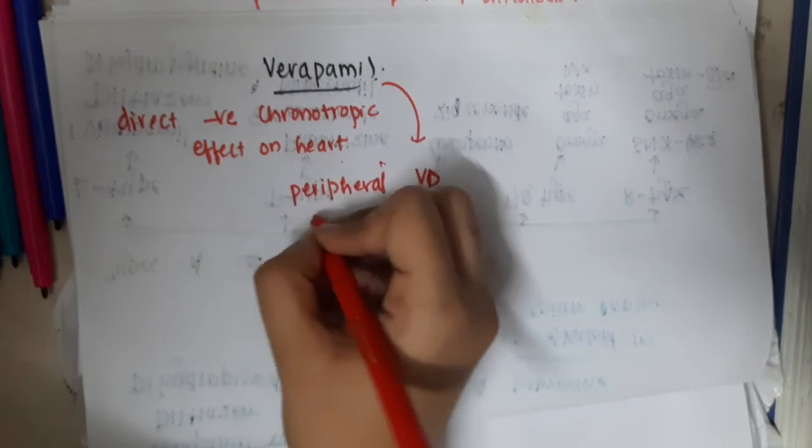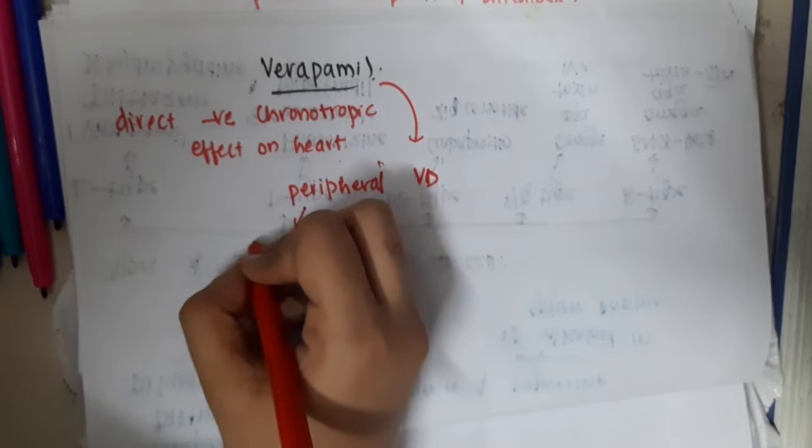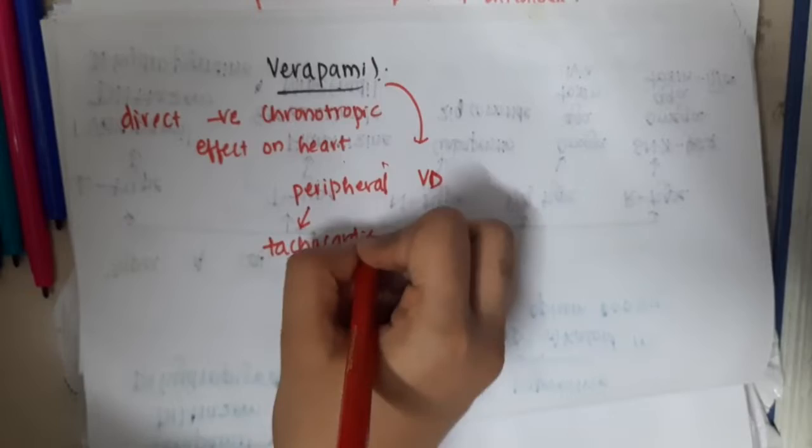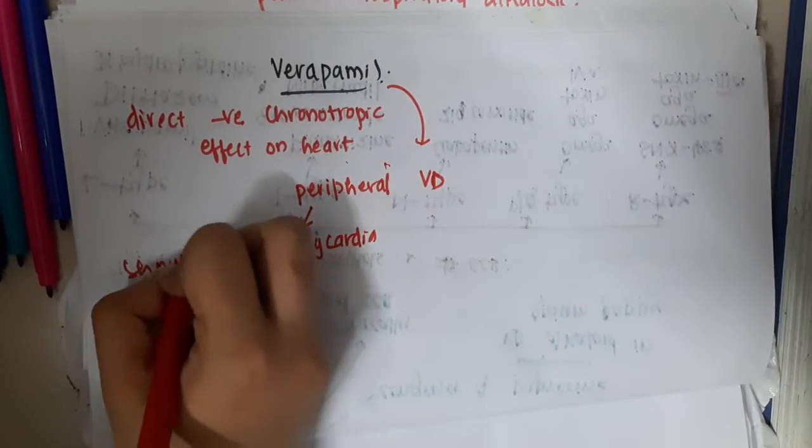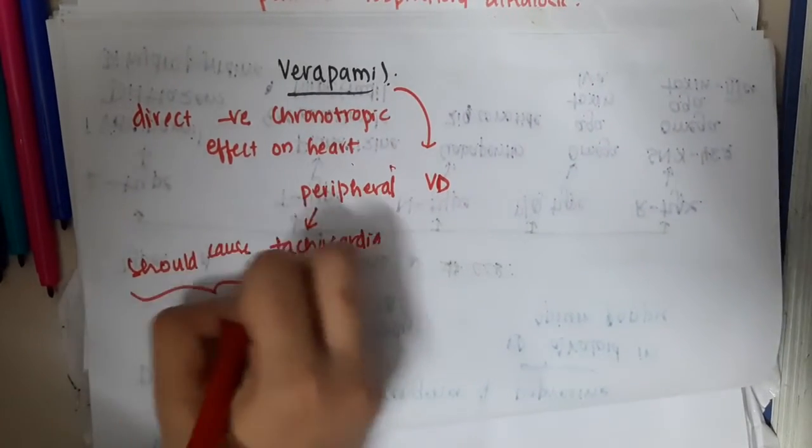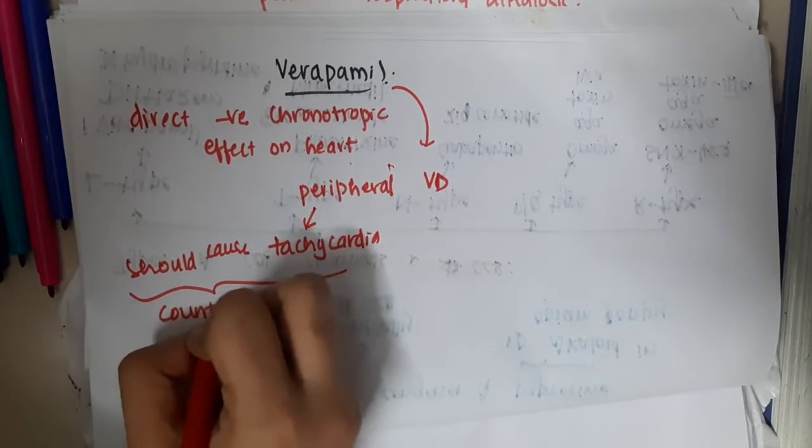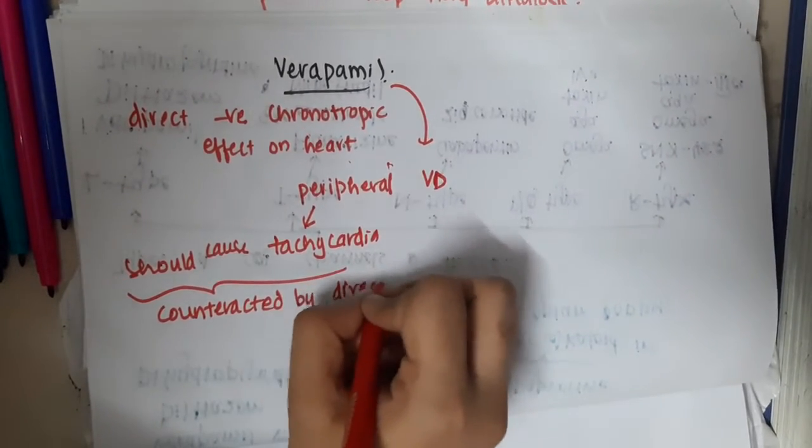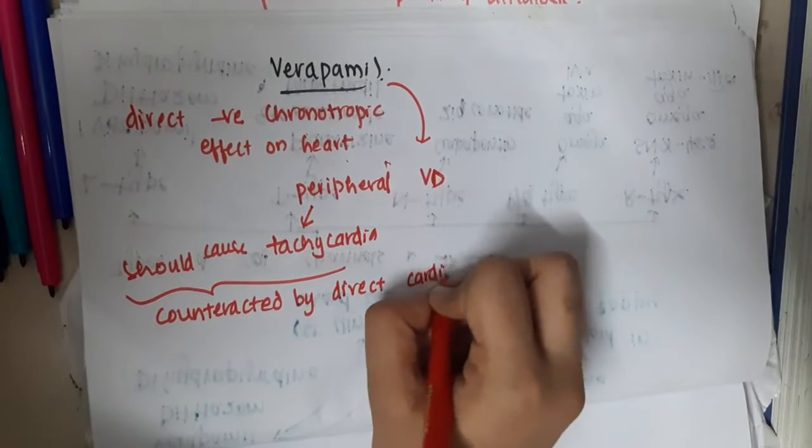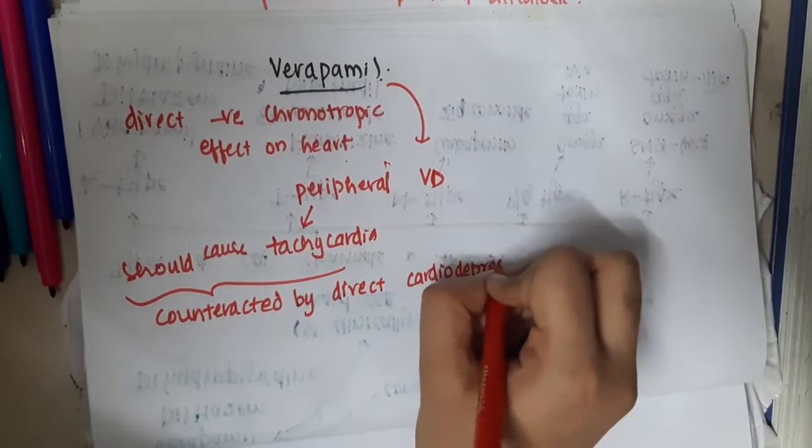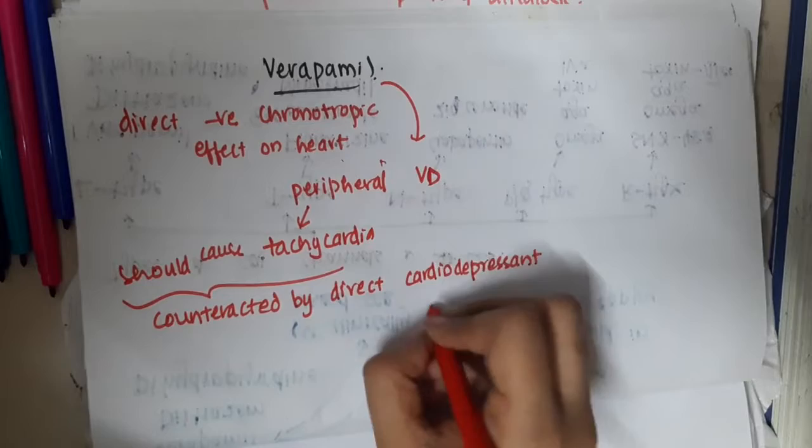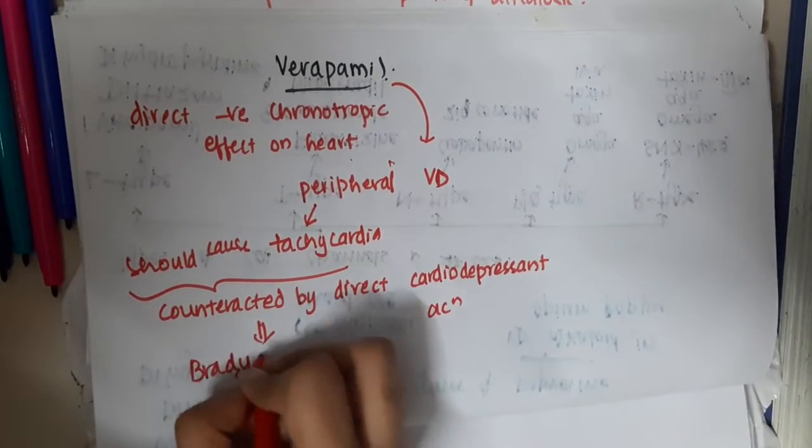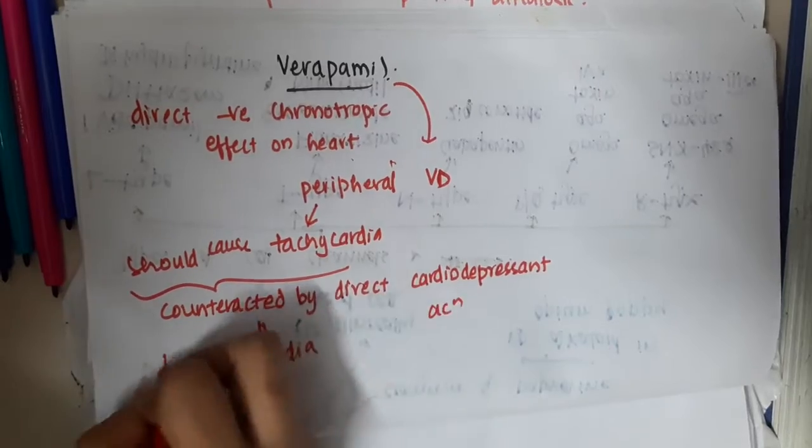Thus it should cause tachycardia, but this is counteracted by direct cardio-depressant action. So this peripheral vasodilatory action is counteracted by cardio-depressant action, thus it results in bradycardia in the patients.